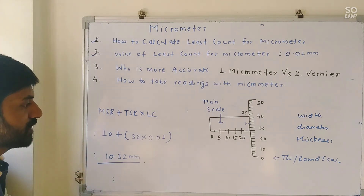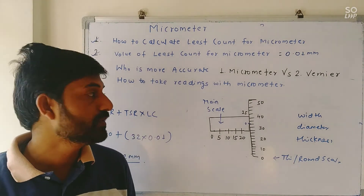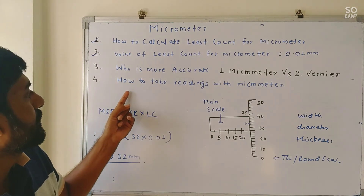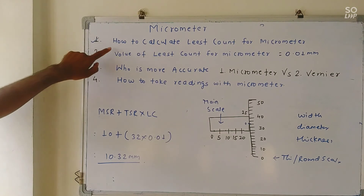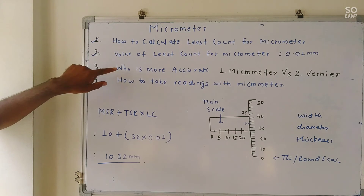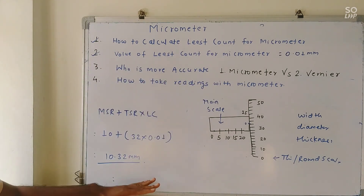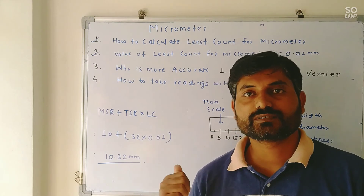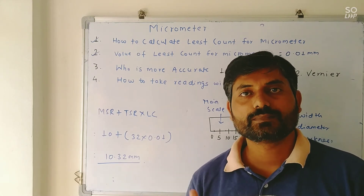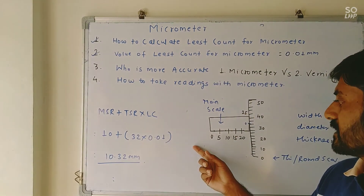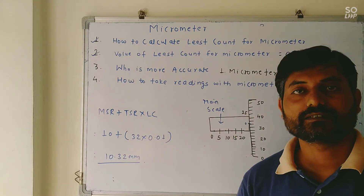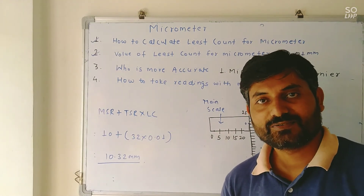So in this way we can calculate and take the reading of a micrometer. In today's lecture we completed how to calculate least count, the value of least count, who is more accurate — micrometer versus vernier caliper — and how to take a reading with the micrometer. I hope this video is helpful. Please share this video with your friends, like, and subscribe to my channel. Thank you.